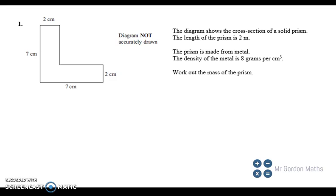Okay guys, question one. We are looking at a diagram that shows a cross section of a solid prism. The length of the prism is two meters long, so this is actually the cross section of a 3D shape.